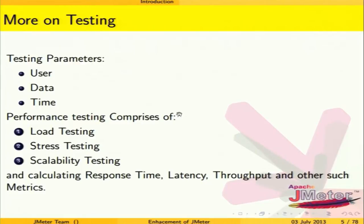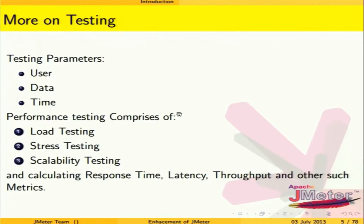Testing basically revolves around three things: user, data, and time. Users refers to the multiple number of users used for testing; data refers to the response data received and the data fed in; timing refers to how we time the requests being sent. JMeter is primarily a performance testing tool, and we test performance using these dimensions.